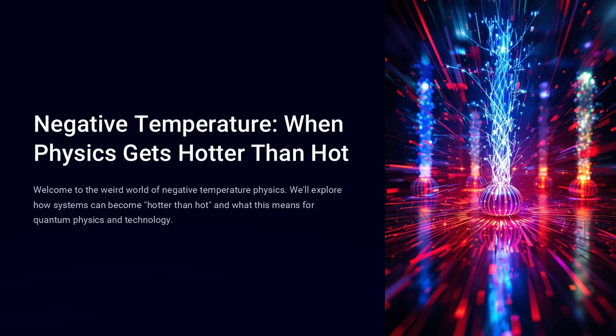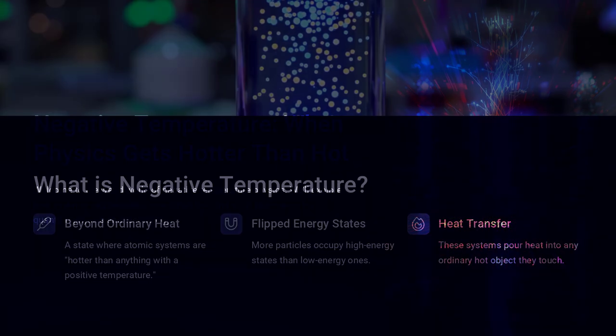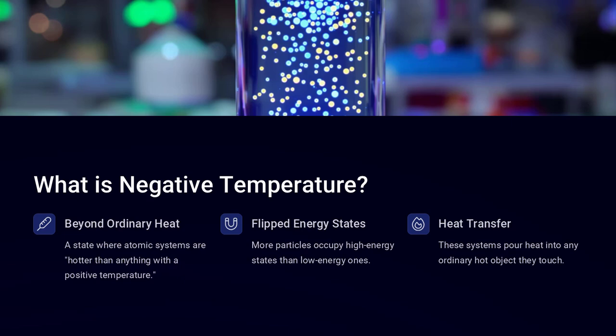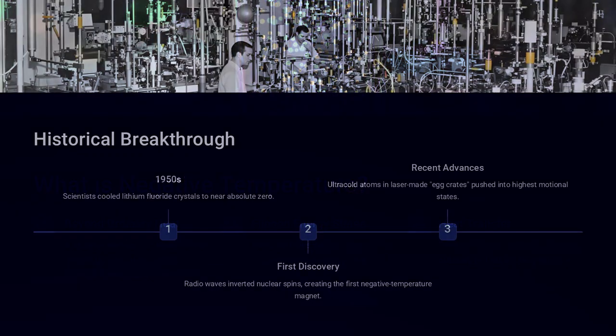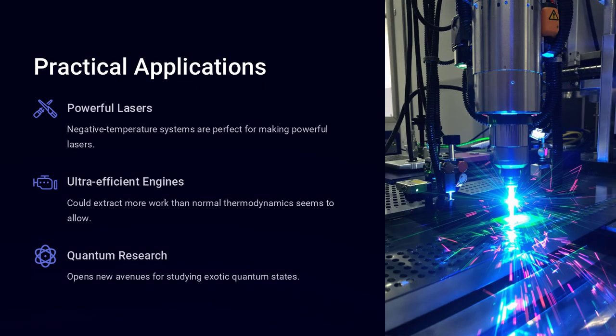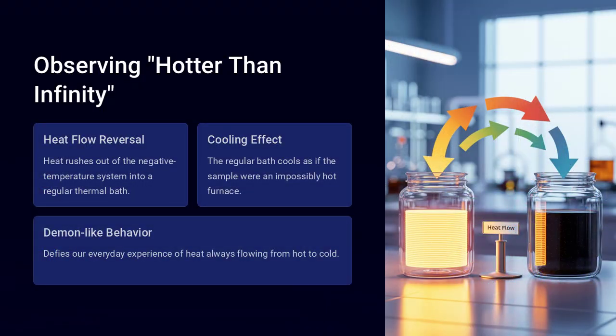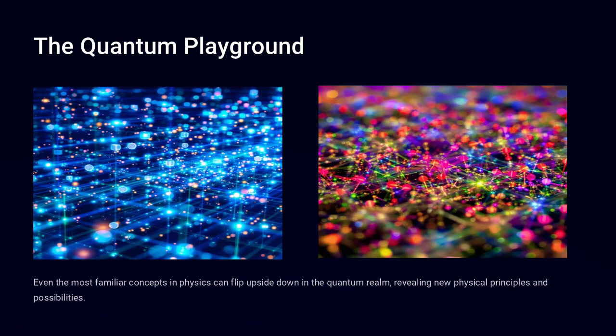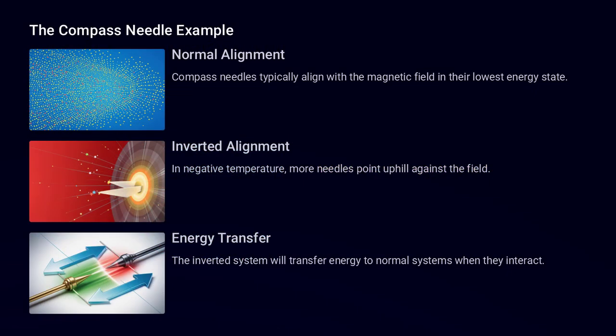Imagine you're tuning a special set of atomic magnets, spins in a magnetic trap, and instead of most pointing down in their lowest energy state, you somehow flip more of them up, crowding the highest energy levels. Suddenly, your little spin system acts as if it's hotter than anything with a positive temperature. It will gladly pour heat into any ordinary hot object you touch. Welcome to the weird world of negative temperature. How can hotter than hot exist?